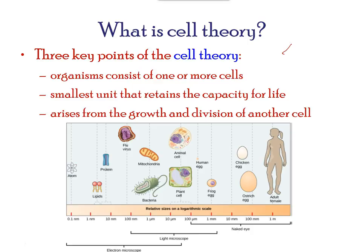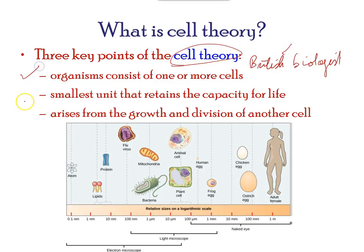In the early 1800s, a British biologist stated the main components of cell theory: all organisms consist of one or more cells — the smallest unit that retains the capacity for life — and all cells arise from the growth and division of another cell.